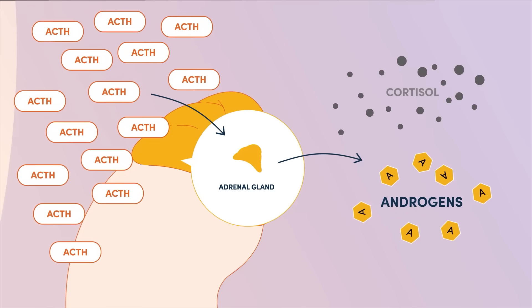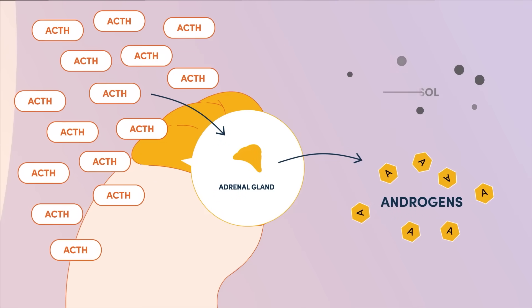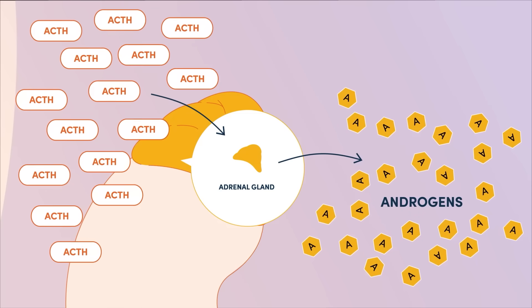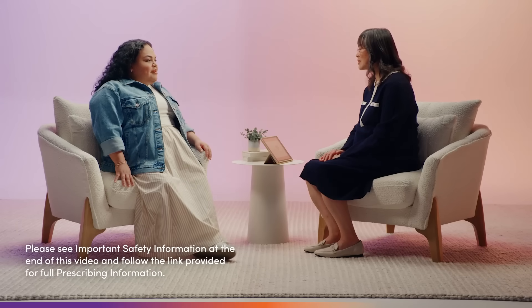And CAH affects some of these signals, right? Absolutely. In CAH, the enzyme that you need to make cortisol doesn't work. So what happens is that the adrenal glands end up making all these androgens instead — way more than you need. My adrenal glands are making more androgens, way more than I need, and chronicity provides a different way to manage androgen levels to allow lower doses of steroids. That's absolutely correct. Now I understand how CAH affects hormones.